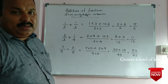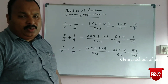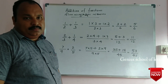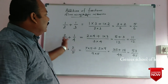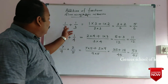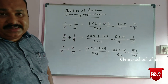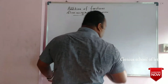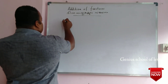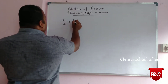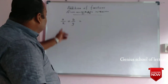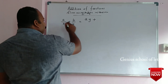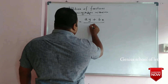That is an answer. The other way to do it is cross-multiplication. The formula is: a by x plus b by y equals a into y plus b into x, by x times y.